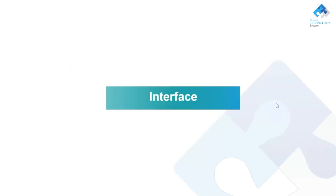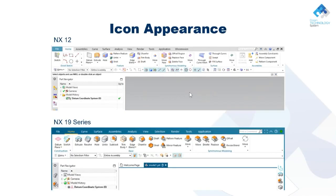Let's go to the first topic: interface. The NX interface has changed a lot from NX 12 to NX 19 series — not only the main theme color but also the command button design. In NX 12, icons had one style; in the 19 series, all icons have been updated to a new interface design.